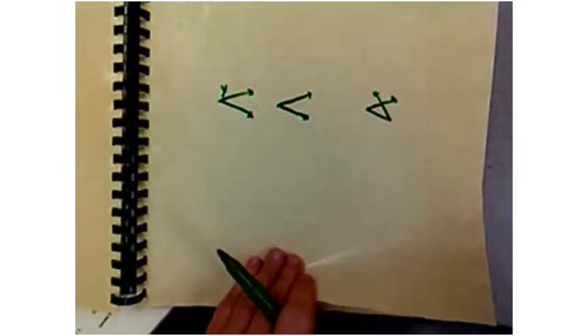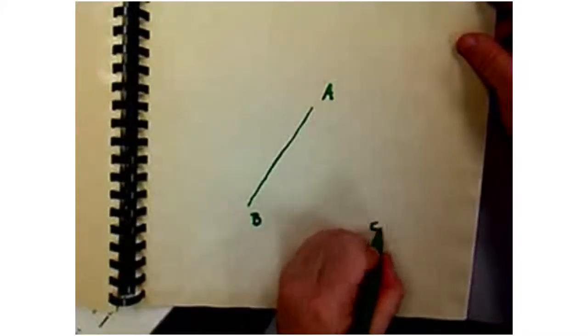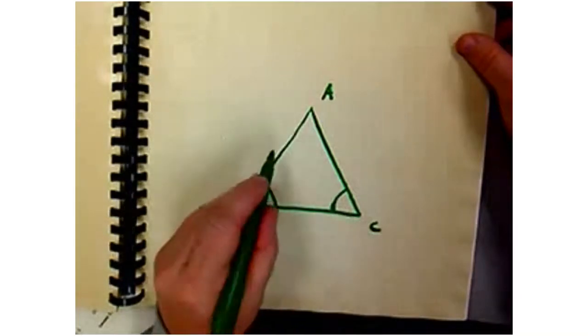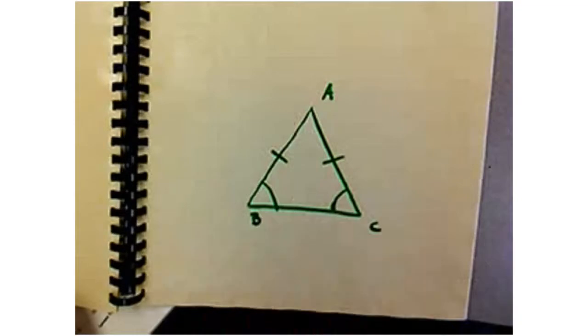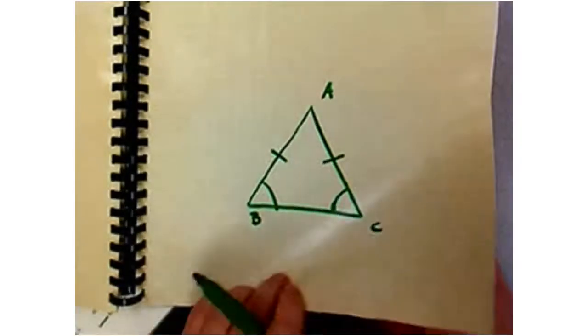That brings us to theorem 6-4, which is the converse of the original isosceles theorem. Where theorem 6-2 said if two sides are congruent then the opposite angles are congruent, theorem 6-4 says: if two angles of a triangle are congruent, then the sides opposite those angles are congruent. The drawing shows vertex A at top, B at bottom left, C at bottom right — tick arcs at B and C mean tick marks on the opposite sides. So if given two congruent angles, you know it's isosceles and those opposite sides are the congruent legs.